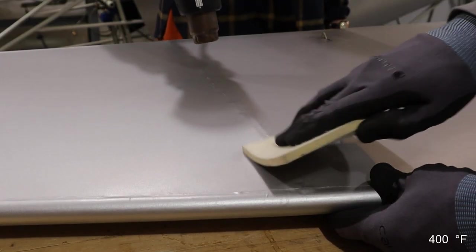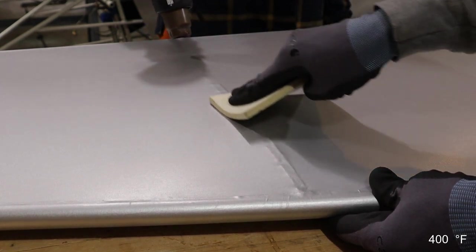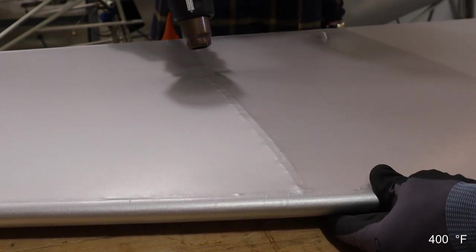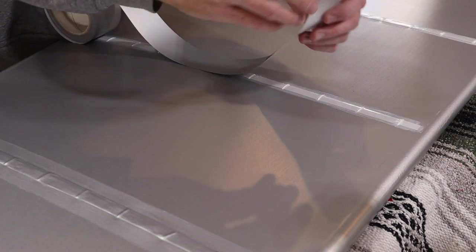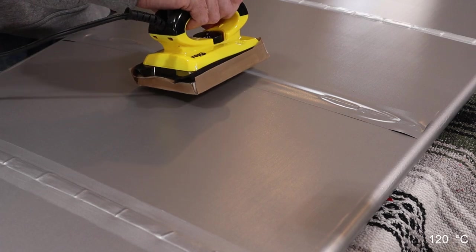After the glue was fully cured and after stretching the open areas tight, we glued the fabric to the ribs, applied the reinforcing tapes, rib stitched, and applied the finishing tapes just like we did for the ailerons.